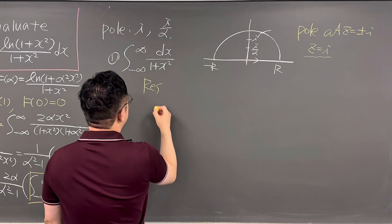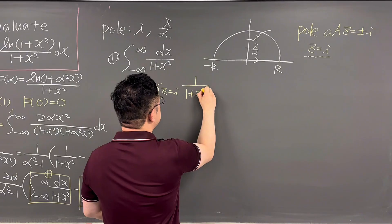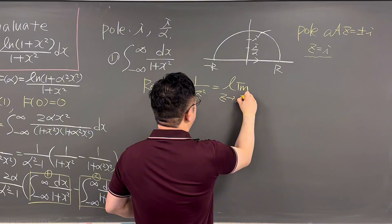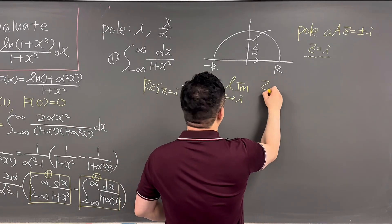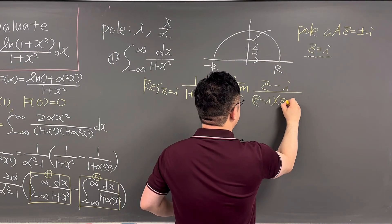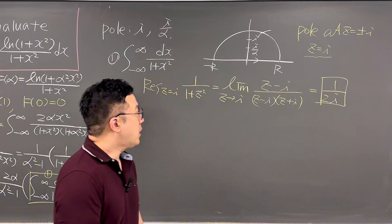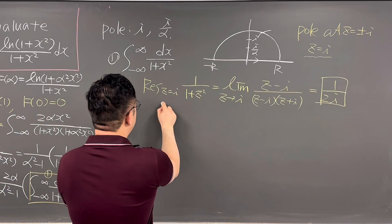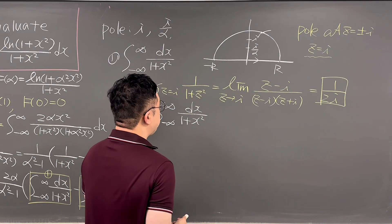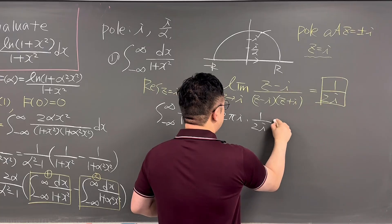The residue at z = i of 1/(1 + z²) is computed as the limit as z → i of (z − i)/[(z − i)(z + i)], which gives 1/(2i). By the residue theorem, the first integral equals 2πi × (1/2i) = π.